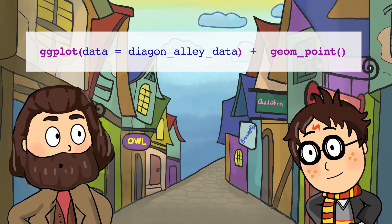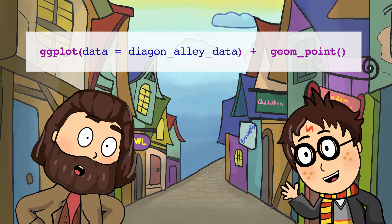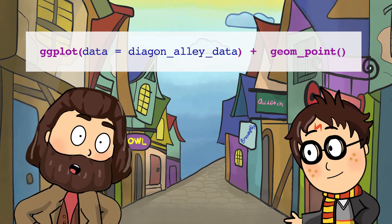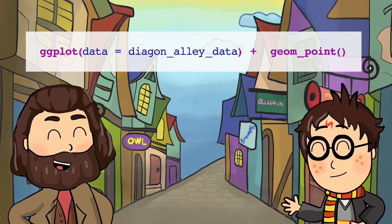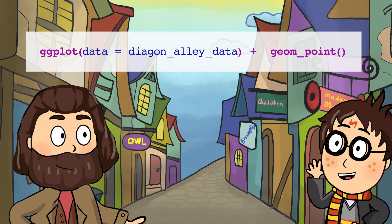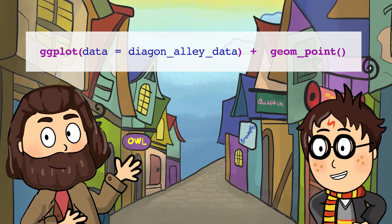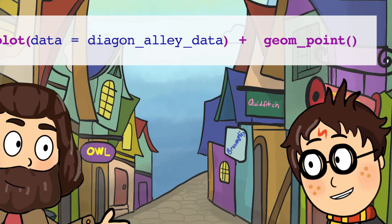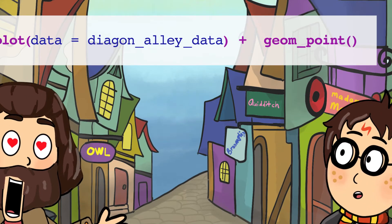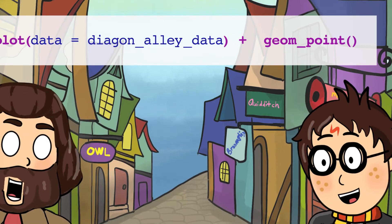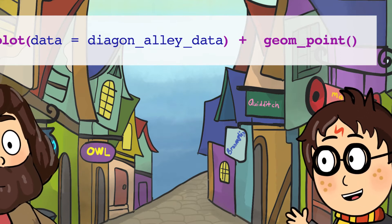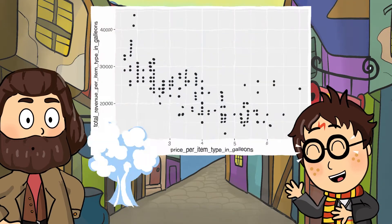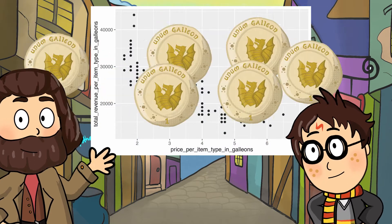What's a geom? A geom is a geometric object that a plot uses to represent data. So geom_point is used to make points in a scatterplot. We can create a scatterplot of the total revenue per item versus the price of each item. Take a look, Hagrid. That's cool, Harry. That's a lot of galleons!